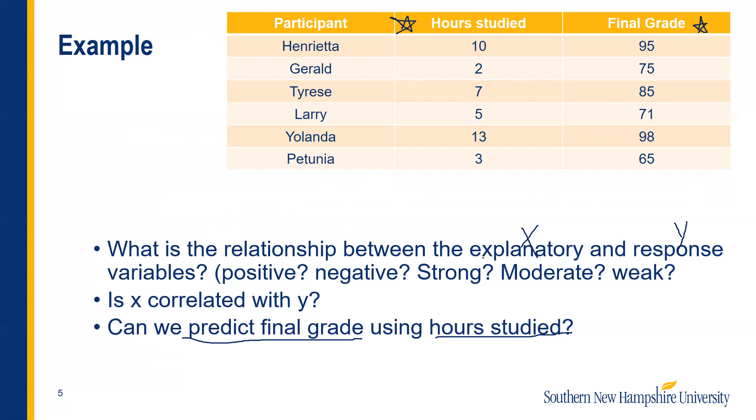Hours studied is our explanation, our x, because it's the one we're going to use to predict. And y is the final grade because it's one we're trying to see if it's responding. Is it responding? Can we predict it? So the whole point is to predict y using x, and that's what we're going to do. We're going to try and do that. But we don't know if we can. We're going to find out if we can do that. That's the whole reason we're doing it, though, is so that we can see if it's correlated and if we can predict.